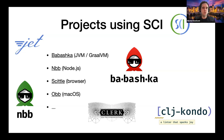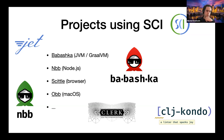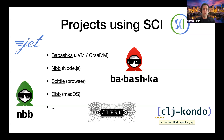To show where NBB sits in the ecosystem: projects using SCI include NBB, Babashka, Jet (a command line tool), clj-kondo (for macro hooks), Clerk (front end viewer), Scittle (evaluate ClojureScript in script tags in the browser), and OBB (a macOS scripting environment for OSA scripts). Every improvement that goes into SCI benefits one or more of these projects. While developing NBB I made many improvements on the JavaScript interop side, which also benefited Scittle and OBB.